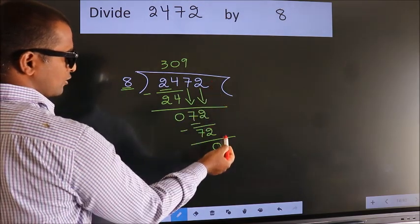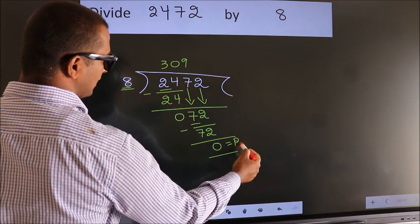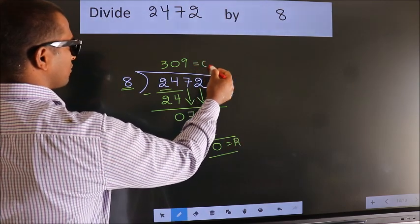No more numbers to bring down. So, we stop here. This is our remainder. This is our quotient.